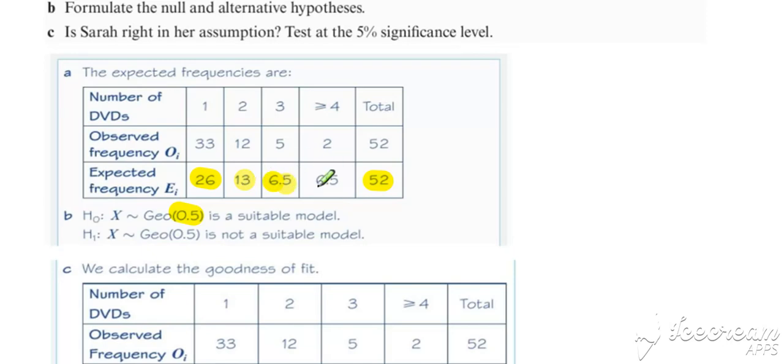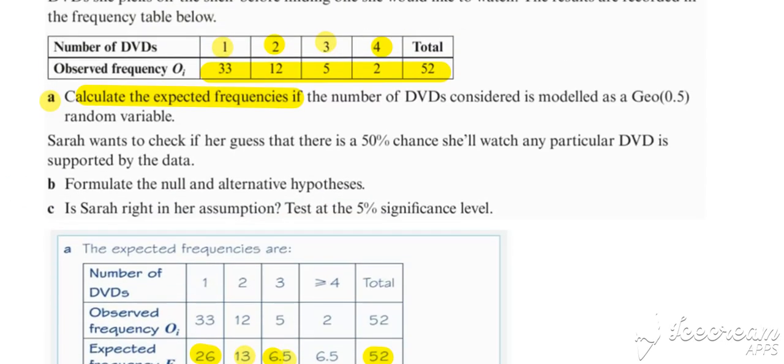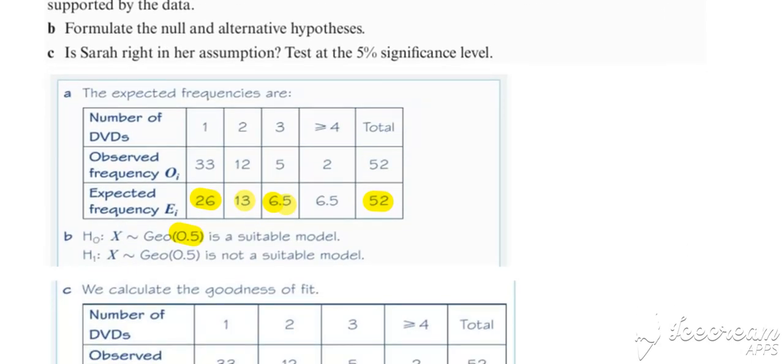And note that because the largest value of X that we had an observed frequency for was 4, then we just group together 4 or greater than 4 for our expected and work out that by doing 52 take away the other 3 to get our 6.5. Similar approach that we used for the Poisson.